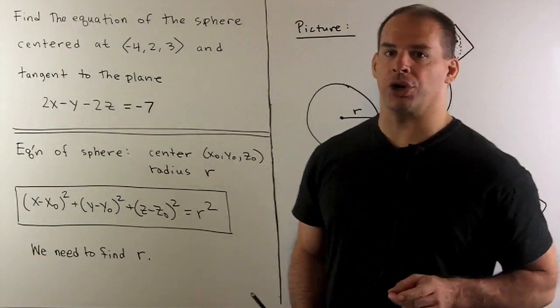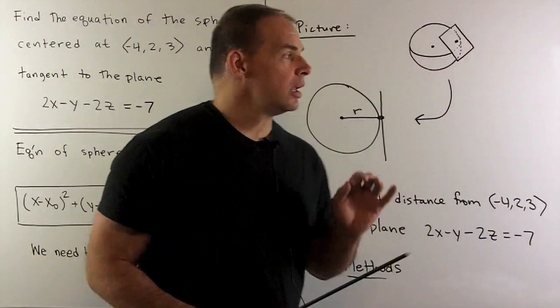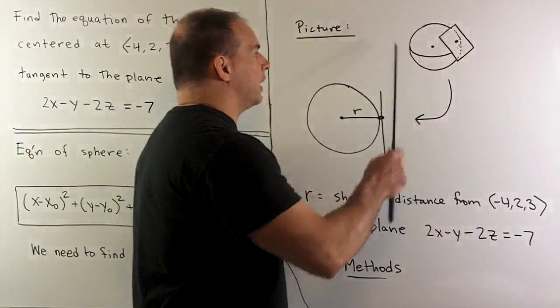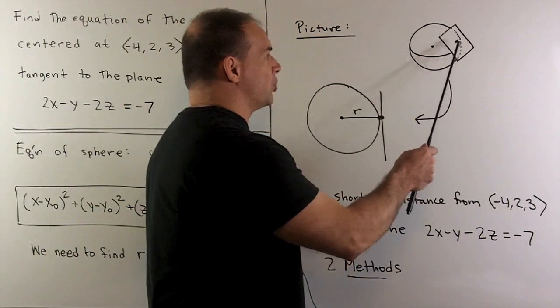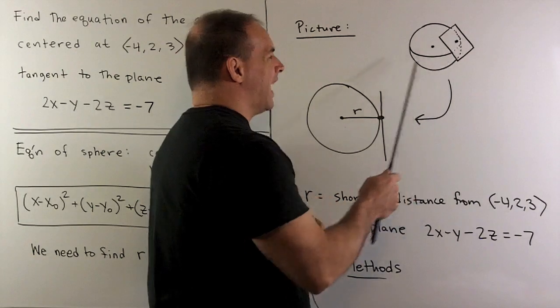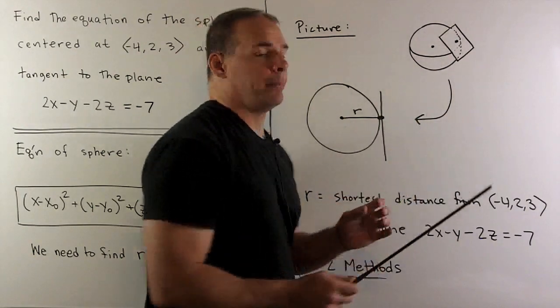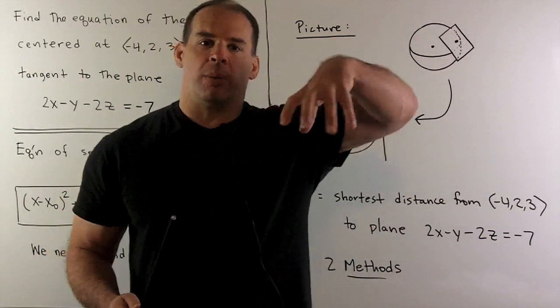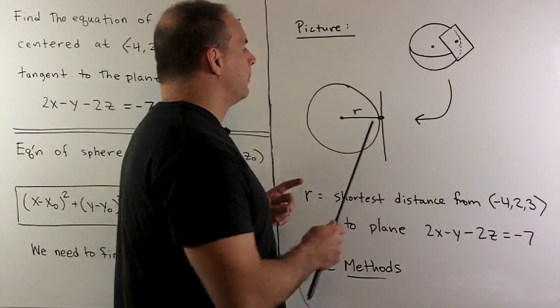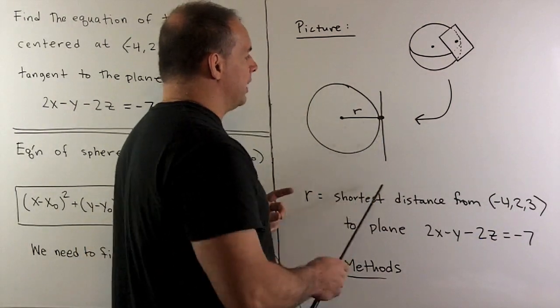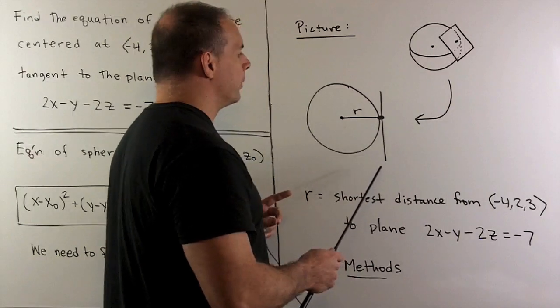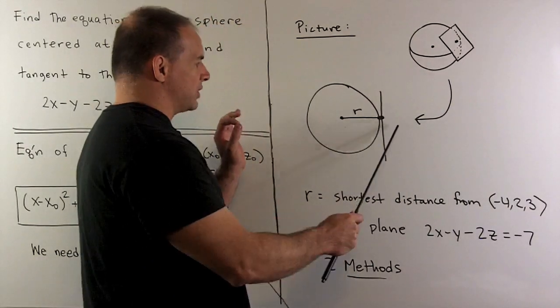For that, we should draw a picture. We draw our sphere. I'm going to draw a plane tangent to our sphere at some point. As drawn, it's not very useful, but if we rotate our picture so that the plane is perpendicular to my blackboard, we can make some sense of this.